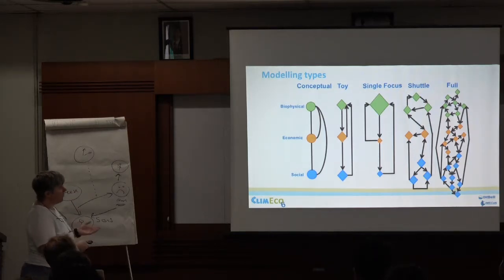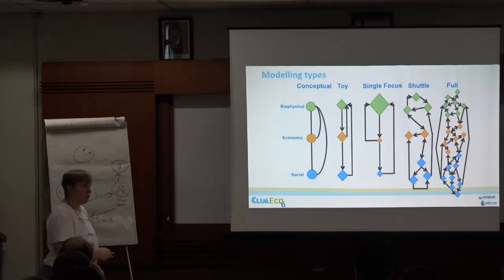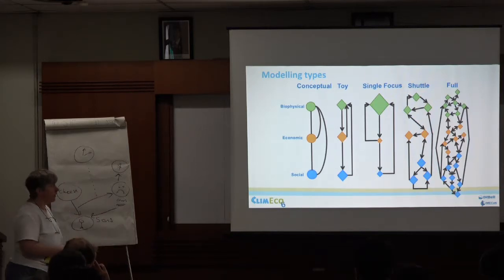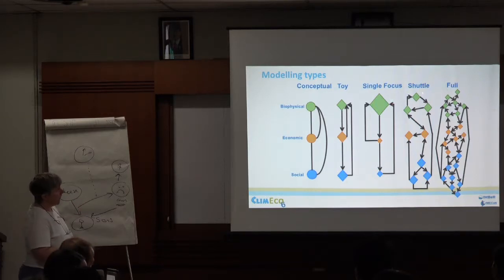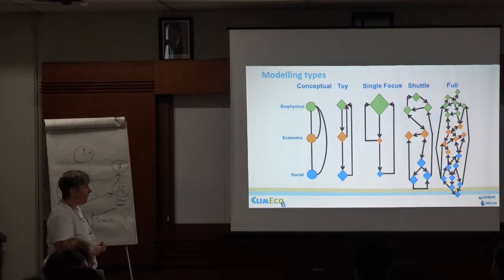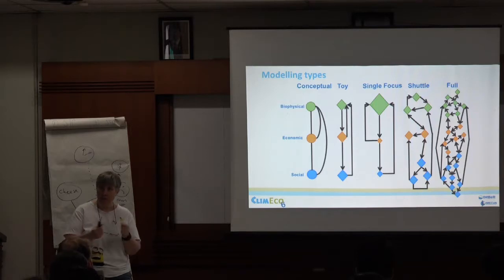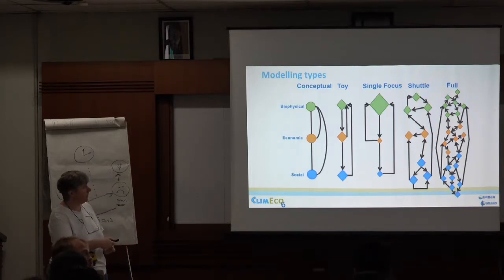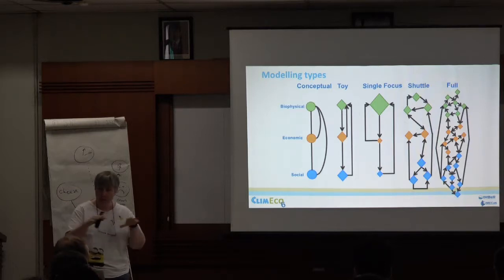A conceptual model is what we've been drawing. A toy model is a set of simple equations — look how much economics has been done on a fairly simple equation. Then there are fishery stock assessment models with a really strong focus on one aspect of the system. There are Models of Intermediate Complexity — they've got a little bit of everything but not in huge detail. And then full system models where there's lots of aspects of biophysical, economic, and social, all in roughly even mix.